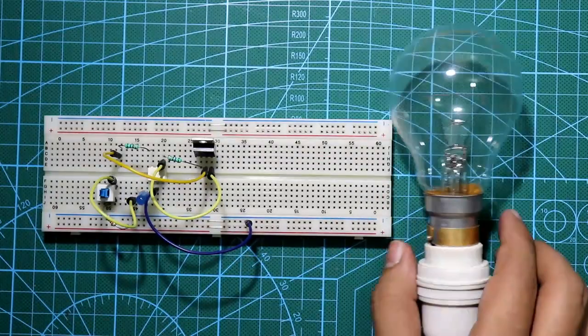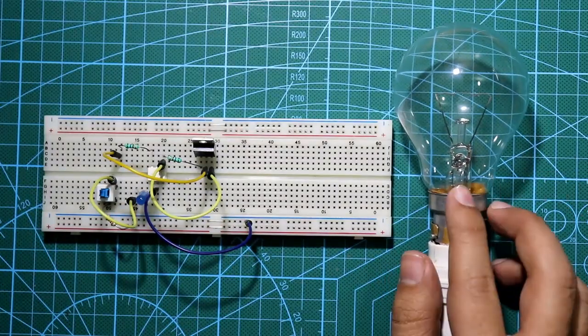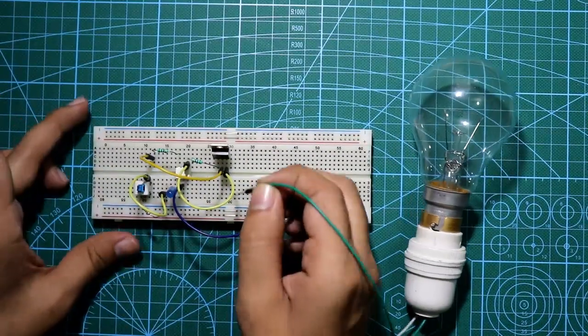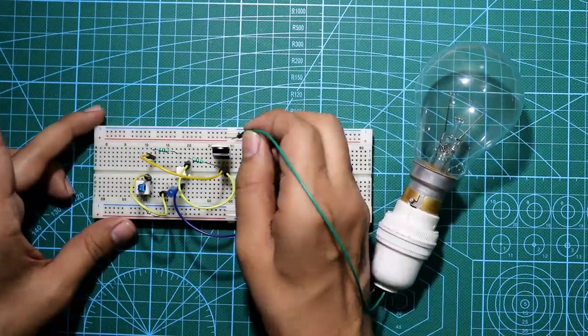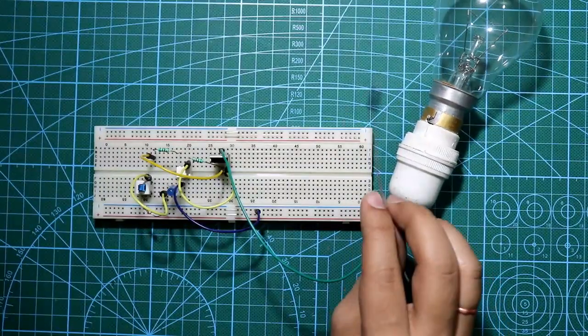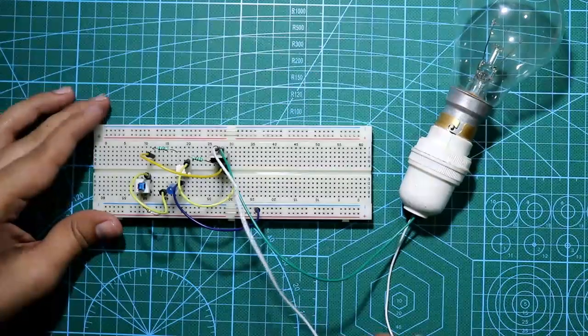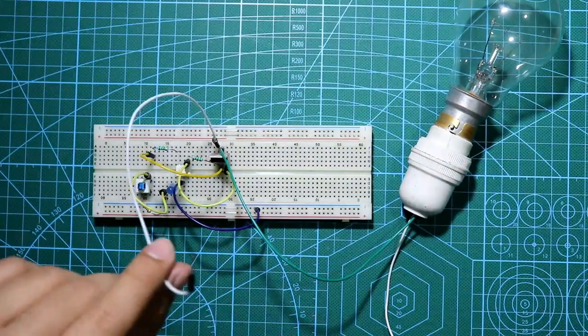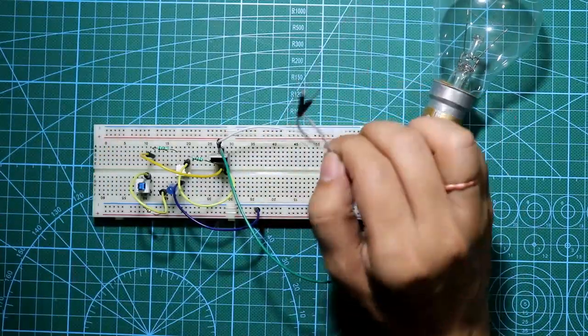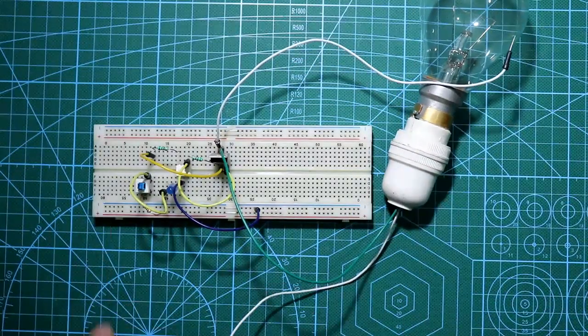And I'll use this load, it is 100 watt electrical bulb and we'll control this bulb with low voltage supply. One terminal of the bulb is connected to MT2 and another terminal of the bulb is connected to AC supply. So these two pins will go to AC supply and here we will apply low voltage.